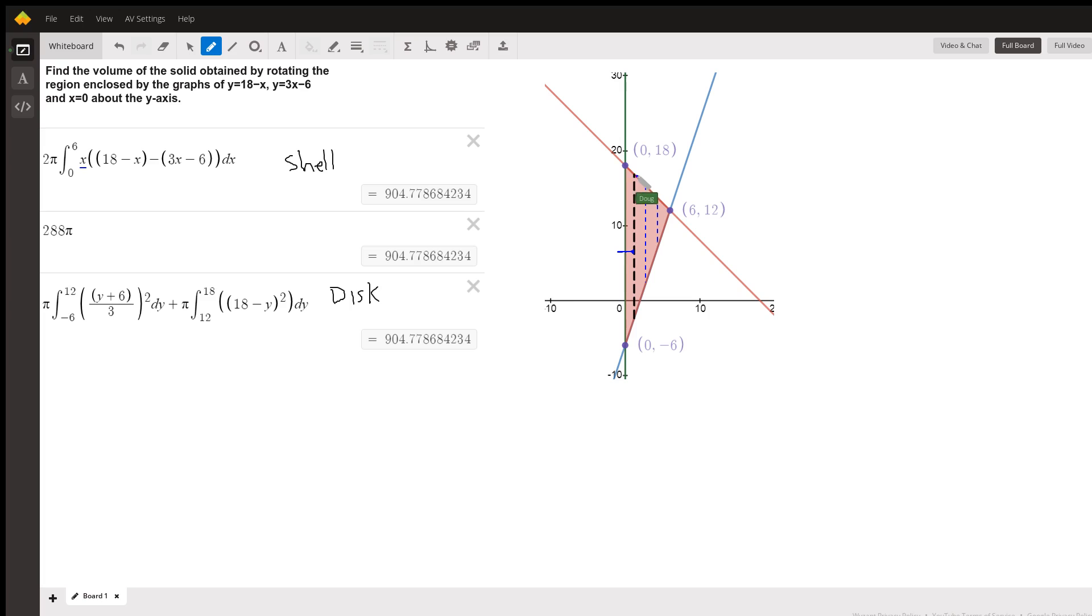And then times the height of the shell, which is top minus bottom. This y value minus this y value. So this is top minus bottom, and this whole expression in here represents the height of the shell.